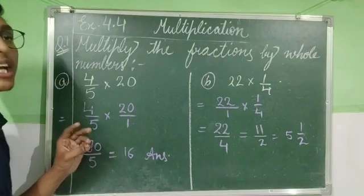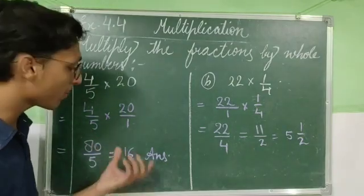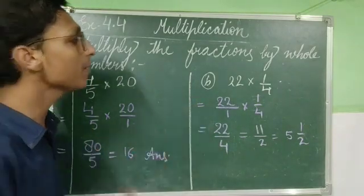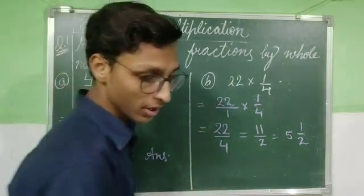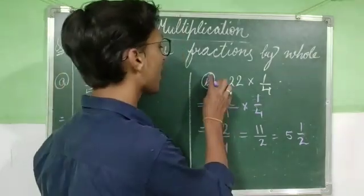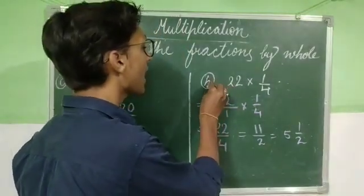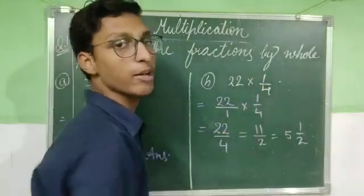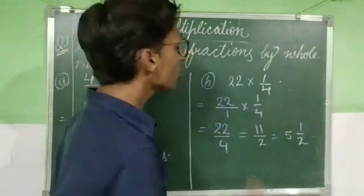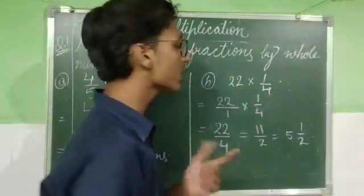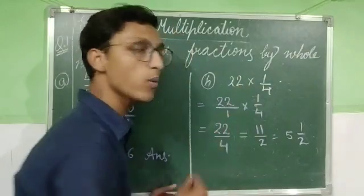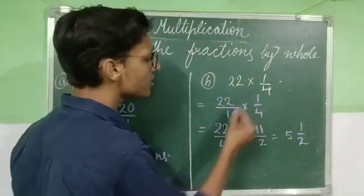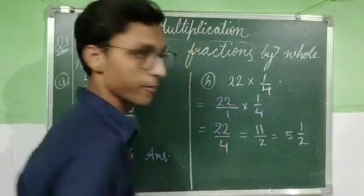Agar divide karne ke baad remainder bachta toh yeh mixed fraction mein change ho jata. Let's have another example: 22 into 1/4. Consider 22 as a fraction like 22/1. So we have 22/1 into 1/4. 22 ones are 22 and 4 ones are 4, giving us 22/4.